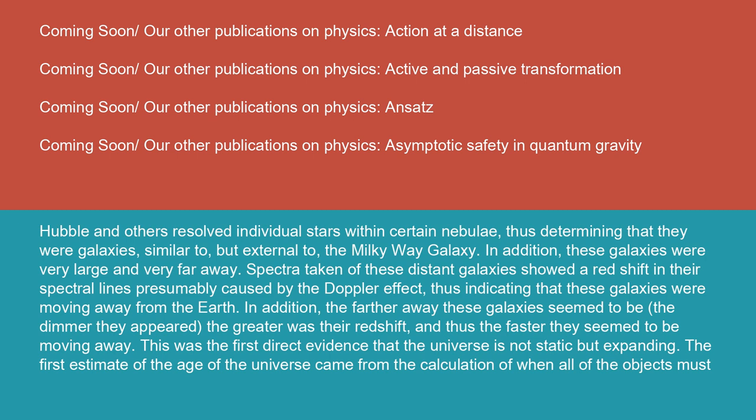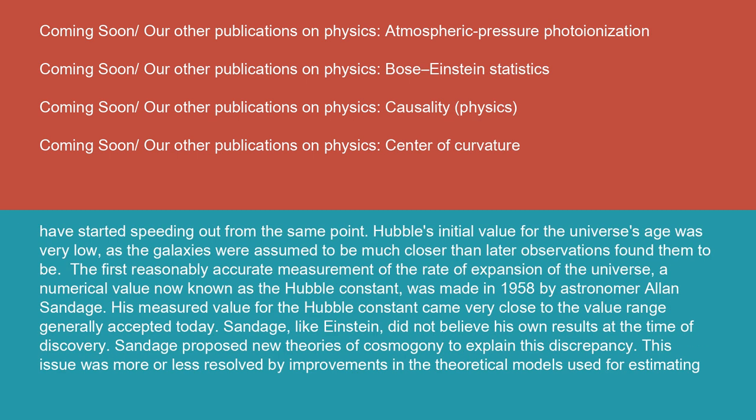The first estimate of the age of the universe came from the calculation of when all of the objects must have started speeding out from the same point. Hubble's initial value for the universe's age was very low, as the galaxies were assumed to be much closer than later observations found them to be.